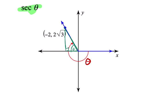We're told that the point has an x value of negative 2. So I'm going to say this is negative 2, and a y value of 2 radical 3, which is this point right here.